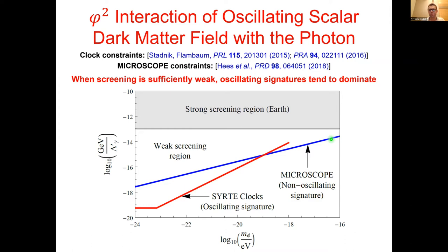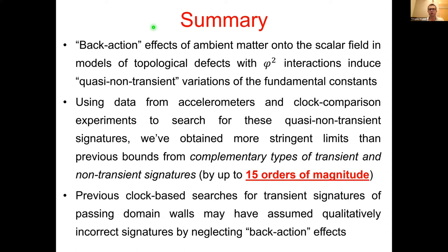The analogous bounds from accelerometers — the analog of quasi-non-transient signatures for domain walls — are shown in blue. With clock-based searches for oscillating signatures, we can improve by up to a factor of 100 compared to non-oscillating accelerometer bounds, because oscillating signatures scale to the second power of the interaction parameter whereas non-oscillating signatures scale to the fourth power. The basic take-home message is that if we want to look for phi-squared interactions with atomic clocks, it is much easier to look for oscillating signatures of an oscillating scalar dark matter field than transient signatures of a passing domain wall.